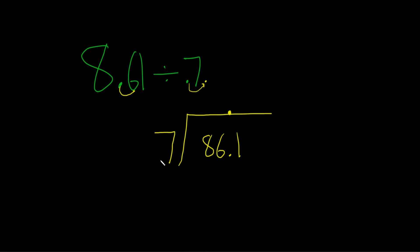How many times does 7 go into 8? Well, one time. So you write down a 1. Then 1 times 7 is 7. Then you subtract. 8 minus 7 is 1. Then you bring down the 6.